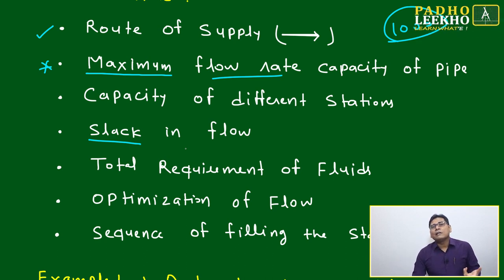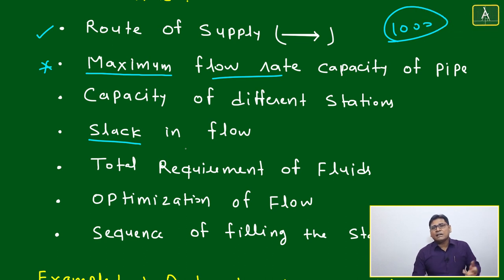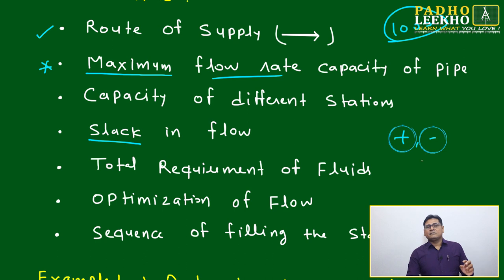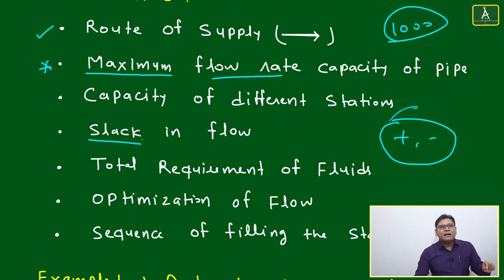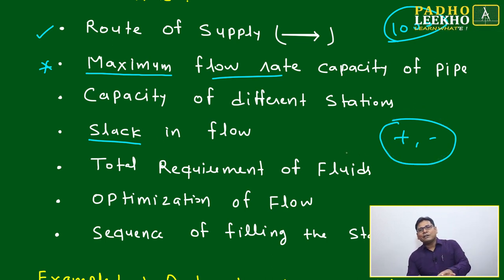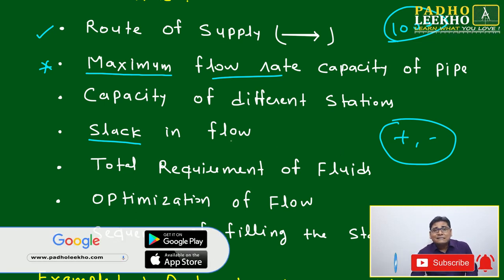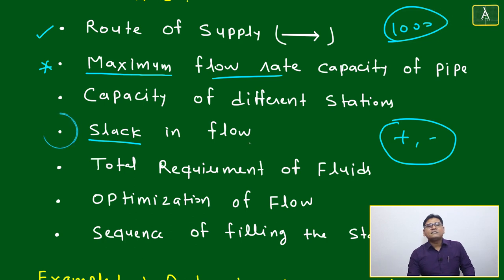Just as in chartered accountancy everything reduces to plus and minus, yet it takes years to master what to add and where — the same logic applies here. This DI caselet is based only on plus and minus, but understanding what to add and where to subtract is the challenge. Slack of flow — the lacking in the pipe — is one of the important concepts.